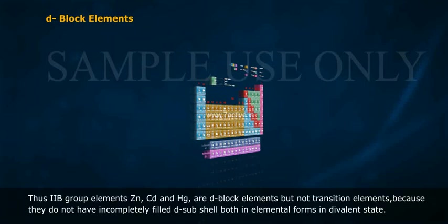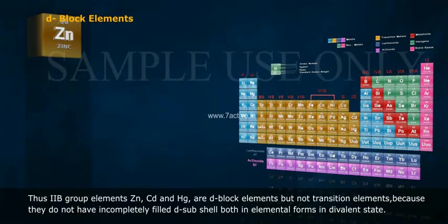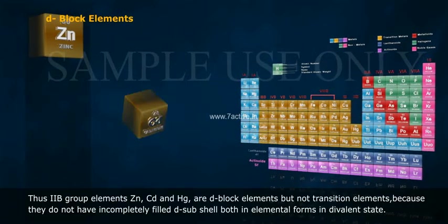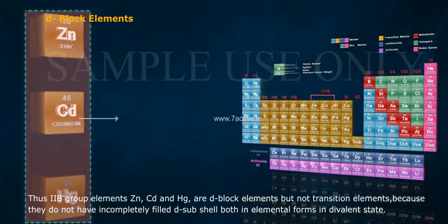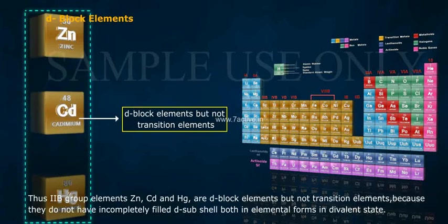Thus, 2B group elements, Zn (Zinc), Cd (Cadmium), and Hg (Mercury), are d-block elements but not transition elements because they do not have incompletely filled d sub-shell both in elemental forms and in divalent state.